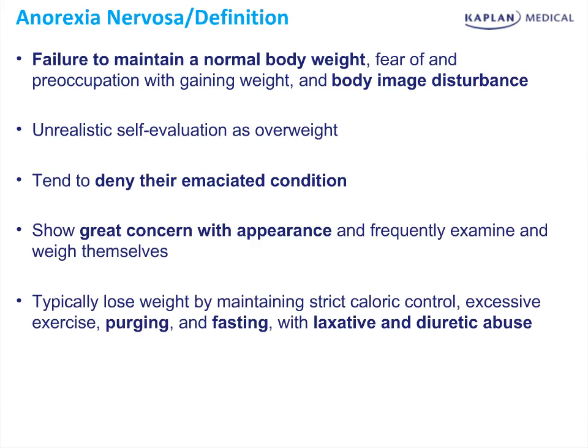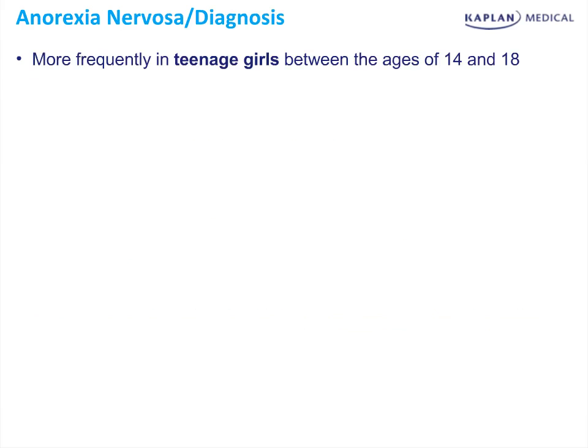They typically lose weight by maintaining strict caloric control or by other means: exercising excessively, purging, fasting, or abusing laxatives and diuretics. The overall picture is low body weight maintained by all kinds of creative methods. The patient is more frequently a teenage girl between the ages of 14 to 18, with evidence of severe weight loss.